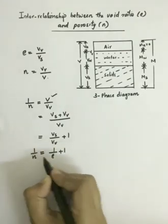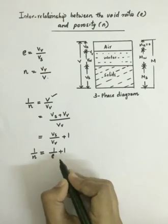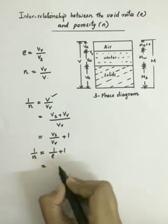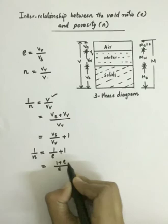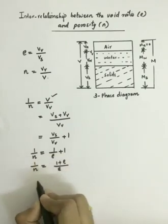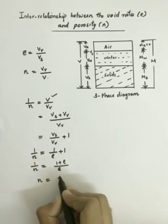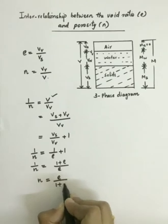So 1 by N is equal to 1 by E plus 1. When you solve this, the equation becomes N is equal to E by 1 plus E.